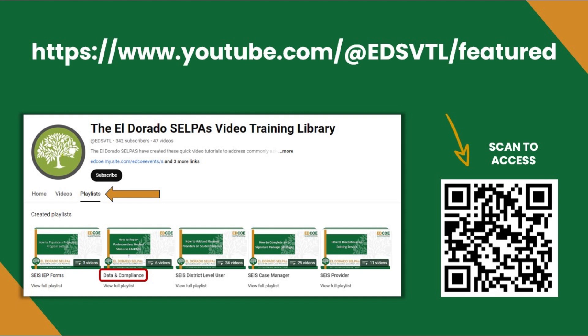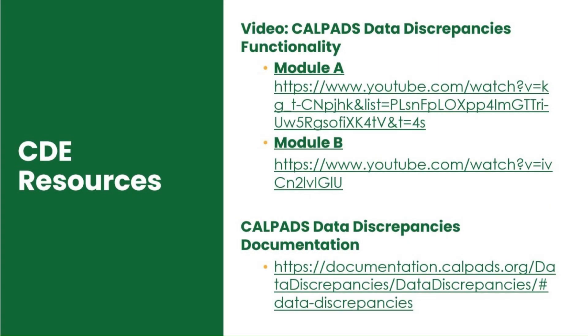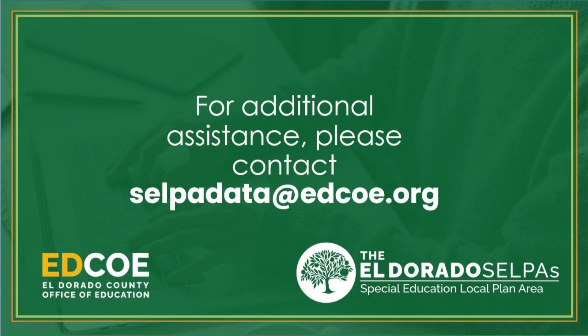The El Dorado County SELPAs have created various how-to videos to assist users in completing SACE activities, specific tasks, and CALPADS reporting. All videos are divided into playlists by SACE permission, including a data compliance playlist for CALPADS reports. Please bookmark this site for future reference. The California Department of Education has created many special education resources, including additional resources for data discrepancies reports. We strongly encourage you to review these resources as well. We hope this web module provides the foundation for utilizing this report. If you have any questions or need additional assistance with data reporting or report review, please contact our SELPA data team.